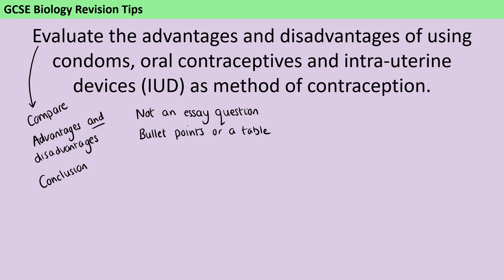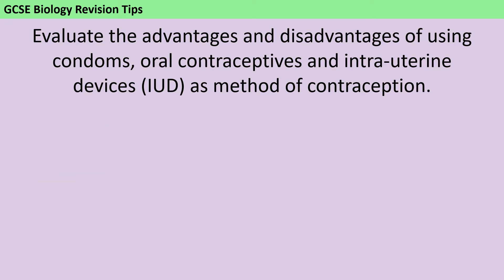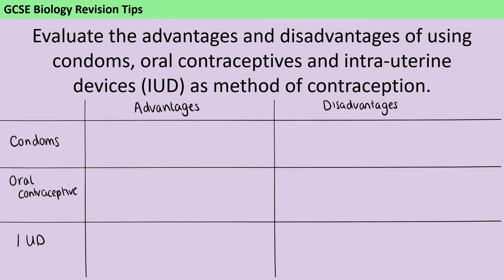If you haven't done so already, pause the video now and give yourself 6 minutes to answer this 6-mark question. To get 4 marks in this question, you're going to need to include advantages and disadvantages of all three methods of contraception. I would definitely lay my answer out in the form of a table, because this gives me 6 clear boxes that I need to fill in to make sure that I do give those advantages and disadvantages of each method. It's also going to make life much easier for my marker, because they can see very clearly that I have covered all of these criteria, rather than wading through pages of waffle.